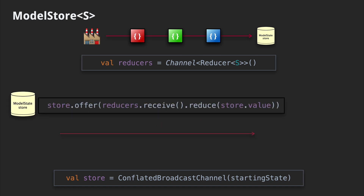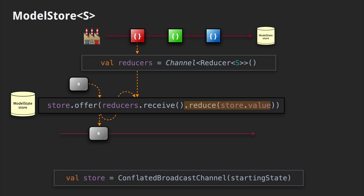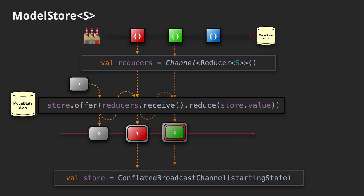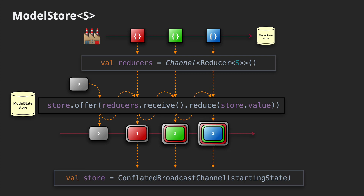Here's the line of code that binds everything together — it's a pretty dense one, so we're going to break it down one step at a time. First, the store's starting state is set at construction time. Then we receive our first reducer, call the reduce function passing in the previously stored value, and finally offer up the results back into the store broadcast channel. We repeat this process for each new incoming reducer and broadcast each new state to our view consumers.